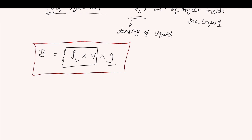So the direction of buoyancy force is always upward, and its magnitude is given as B equals rho L into V into g, where rho L is the density of the liquid, V is the volume of the object inside the liquid, and g is the acceleration due to gravity, that is 9.81 m/s². In this lecture we studied about buoyancy force. Next lecture we will study about magnetic force, so stay connected by subscribing this channel. Until then, have a good day.